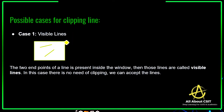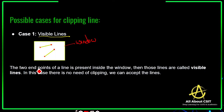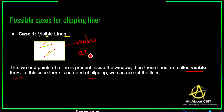Now let's see the possible cases for clipping a line. The first case is visible lines. In the diagram, these two lines are present inside the window. The two endpoints of a line are present inside the window. Then those lines are called visible lines. The only point to remember: if the two endpoints of any line are present inside the window, those lines are called visible lines. In this case there is no need of clipping — we can easily accept those lines.